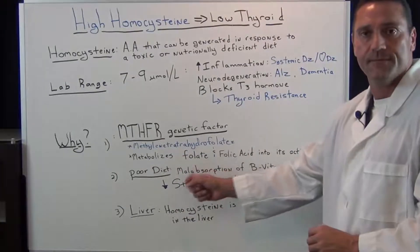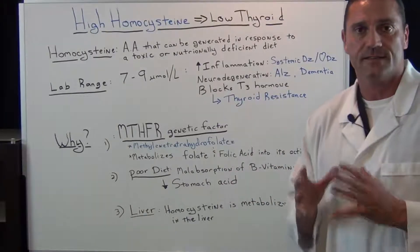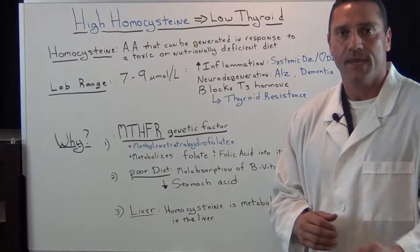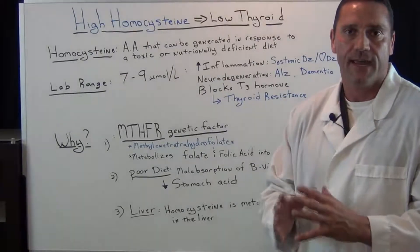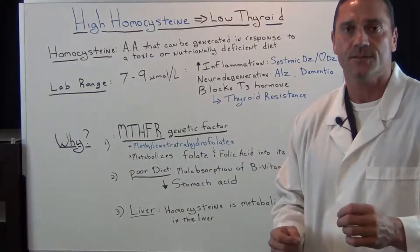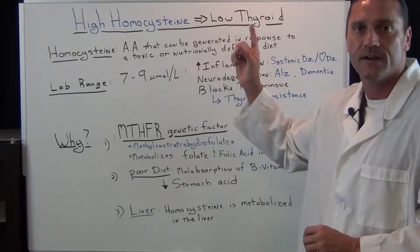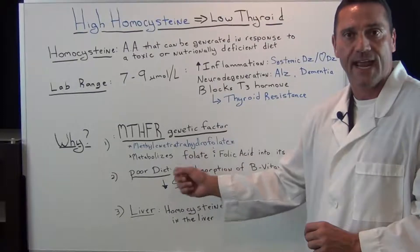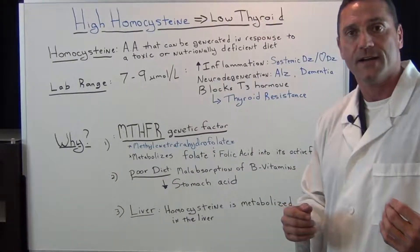Poor diet and malabsorption of B vitamins is the second reason. We need B vitamins for stomach acid, and we need our stomach acid pH to be anywhere between one and three, because we need that acidity to help break down food products and especially for the absorption of the amino acids that are needed. If you have a bad diet and you don't have enough stomach acid, this is where you're going to have malabsorption of B vitamins.